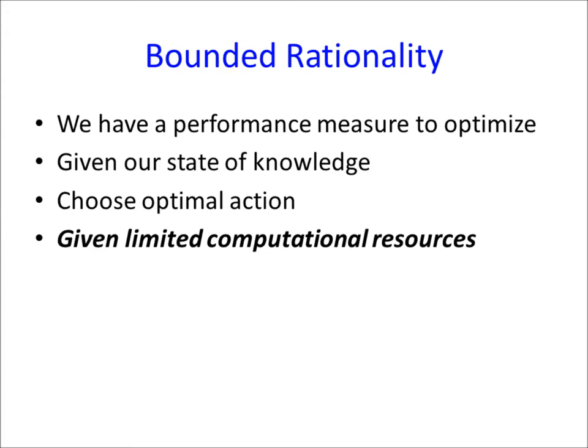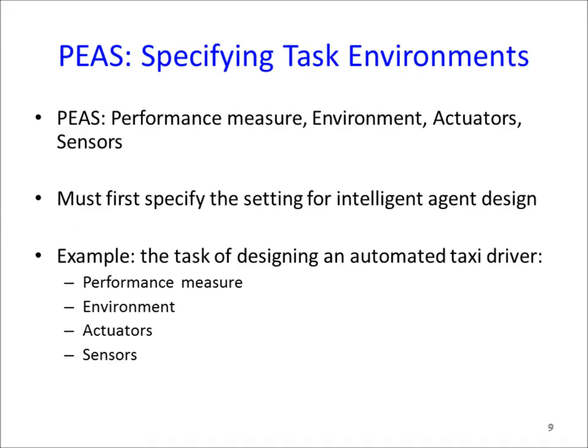You actually built intelligent agents in your first and second assignments because you had only so much time at hand — bounded rationality. Different kinds of agents will have different performance measures, environments, actuators, and sensors. For any intelligent agent design, we should first specify these four criteria. It's called the PEAS definition of an agent.